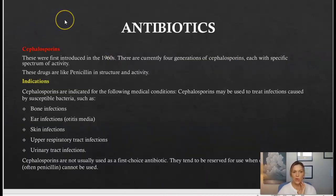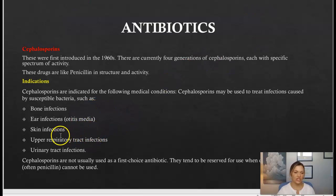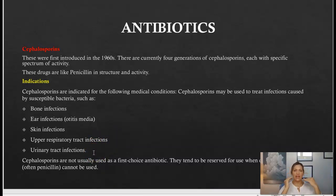Moving on to the cephalosporins. This class was first introduced in the 1960s and currently has four generations, each with a specific spectrum of activity. These drugs are similar to penicillin in structure and activity. Cephalosporins can treat bone infections, ear infections, skin infections, upper respiratory tract infections, and UTIs. What's most important is whether the antibiotic is susceptible to the bacteria — and we find that out by doing a culture.